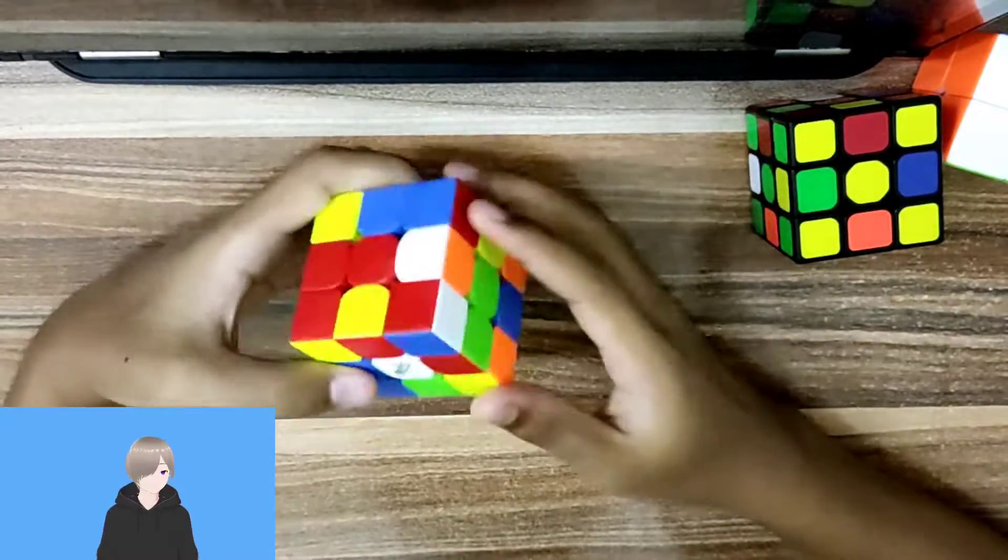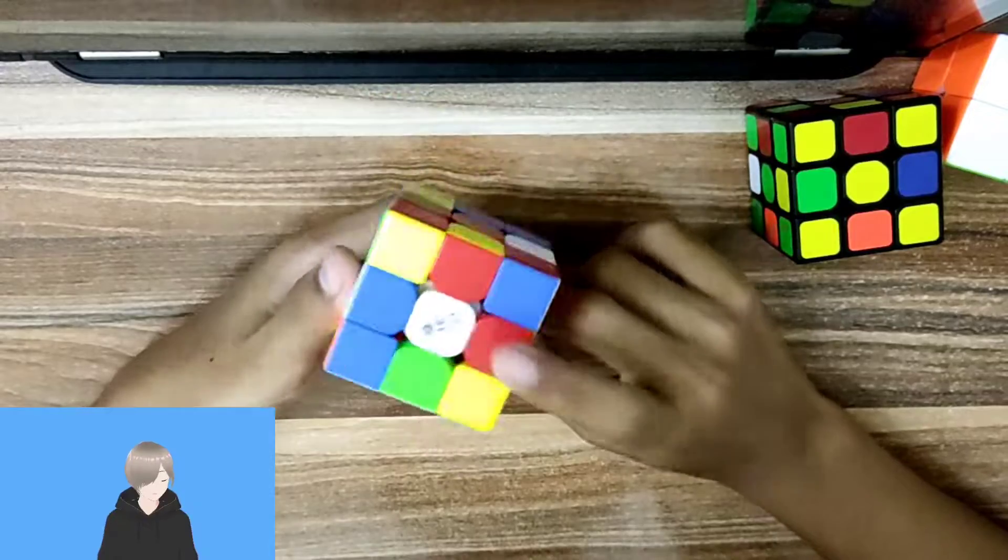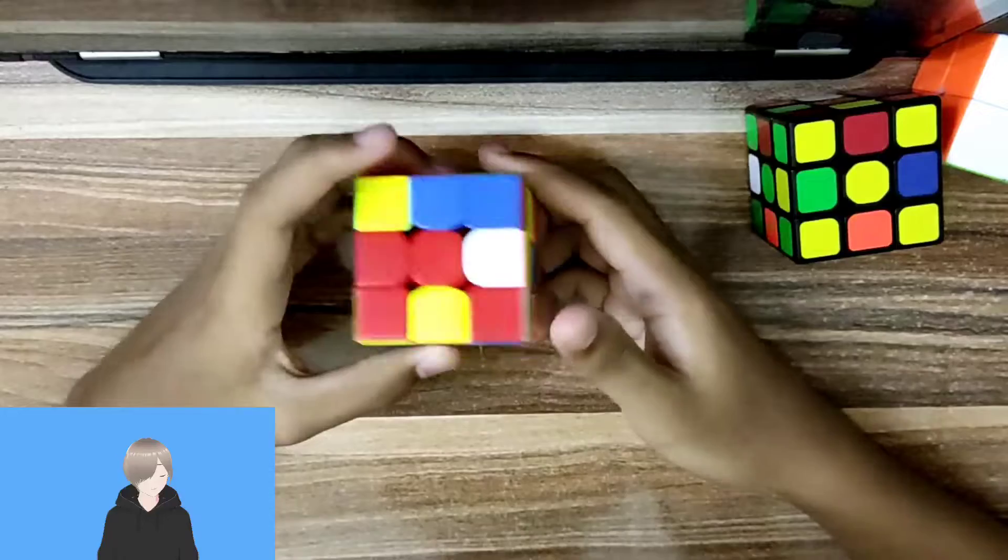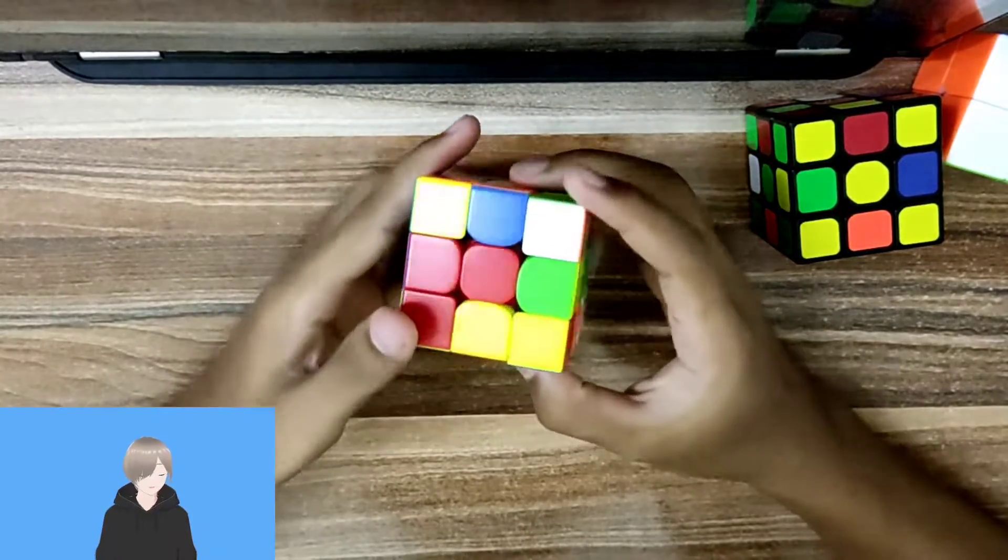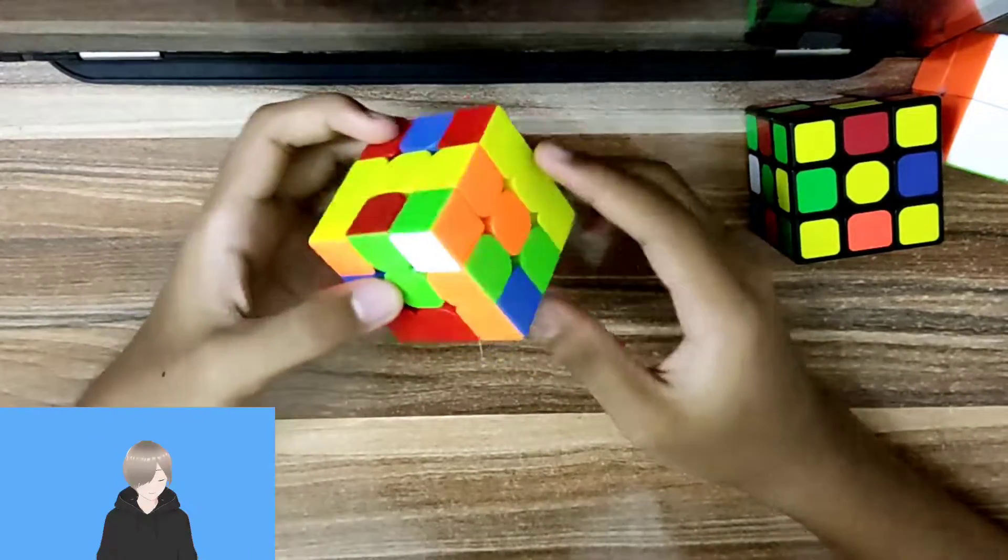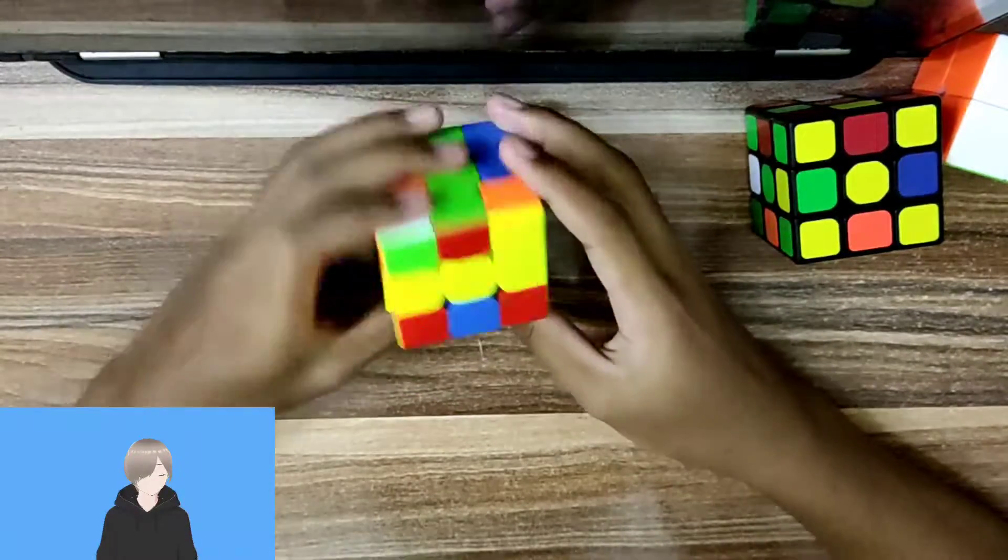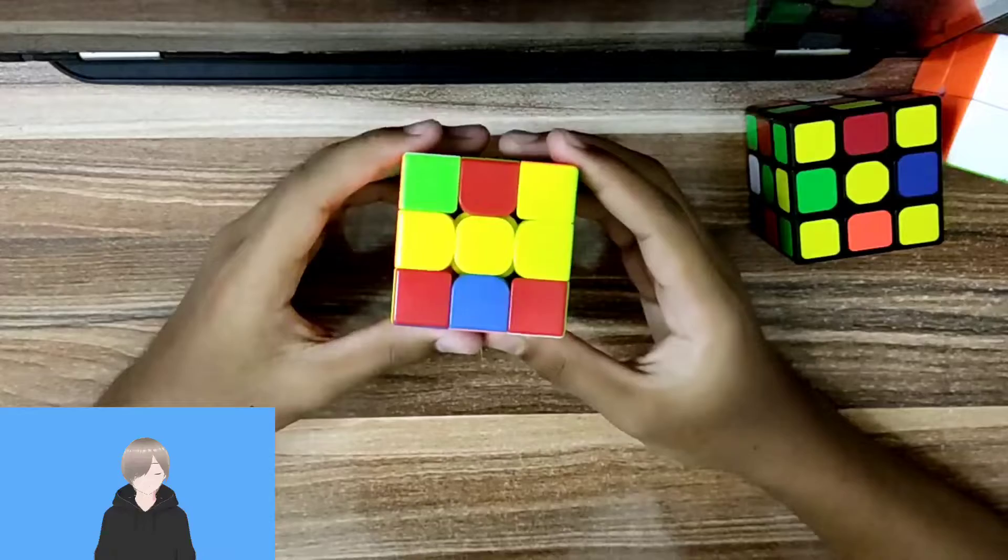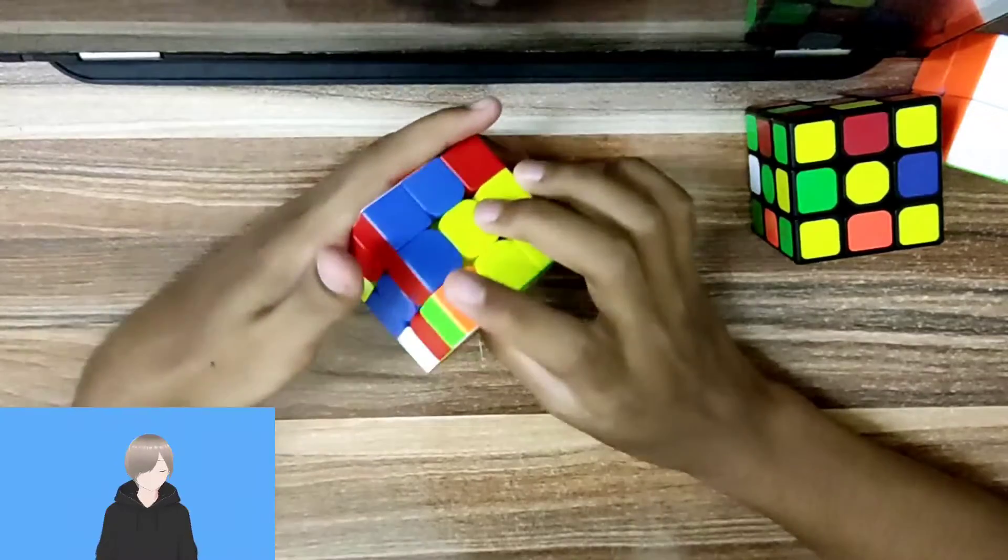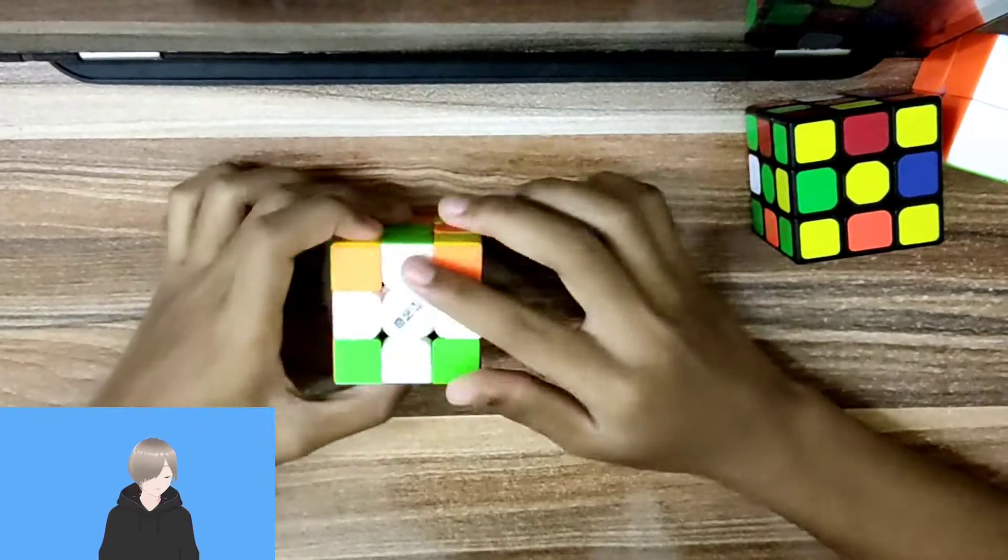So first, we just get the first color, and I will always use this white face. Next, let's do the cross, but differently. Okay, so first, let's just do a normal cross, like this, and I solved the first layer. So this is our cross.